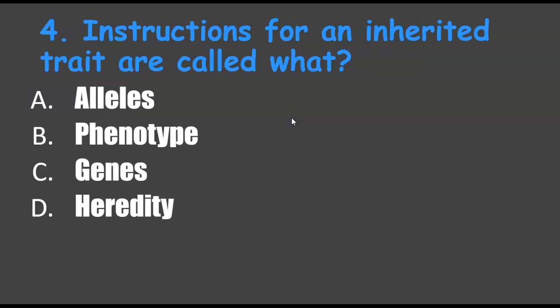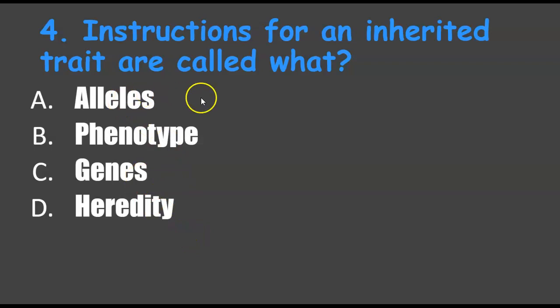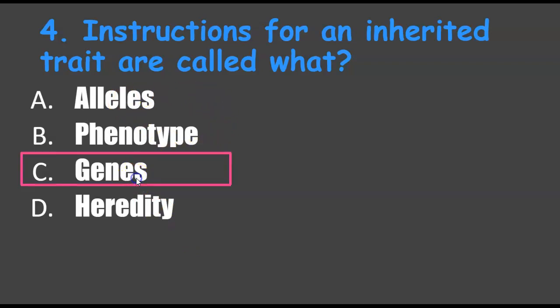Number four: which are the instructions for inherited traits — alleles, phenotype, genes, or heredity? Alleles are found in genes, and genes are the instructions by which cells make physical attributes, or phenotypes.